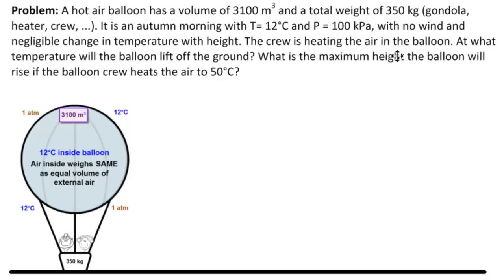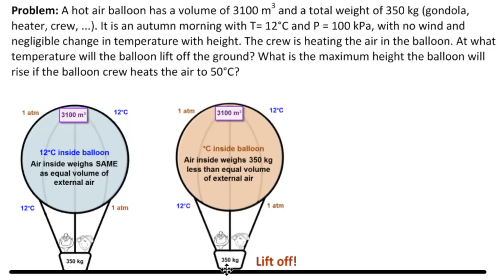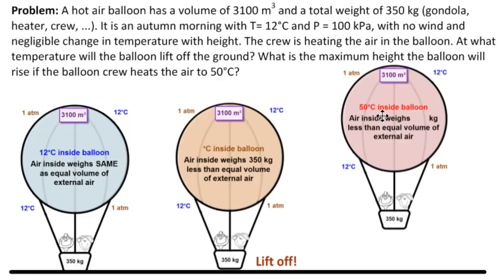Now we start to heat the air in the balloon. At what temperature will the balloon lift off the ground? We've got to get rid of 350 kilograms of weight so we can pick off that weight. We need the air inside to weigh 350 kilograms less than the equal volume of external air — then we're balanced, sitting right there on the ground. We'll keep heating until it gets to 50 degrees inside, and we want to know what height that gives us. Our goal: find the temperature in Celsius inside the balloon for liftoff, and the maximum height if we heat to 50 degrees.